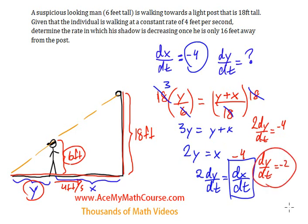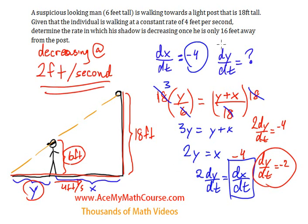And that's it. So what does this mean? His shadow is decreasing at a rate of 2 feet—I'll just take the negative as implied—so it's decreasing at a rate of 2 feet per second.